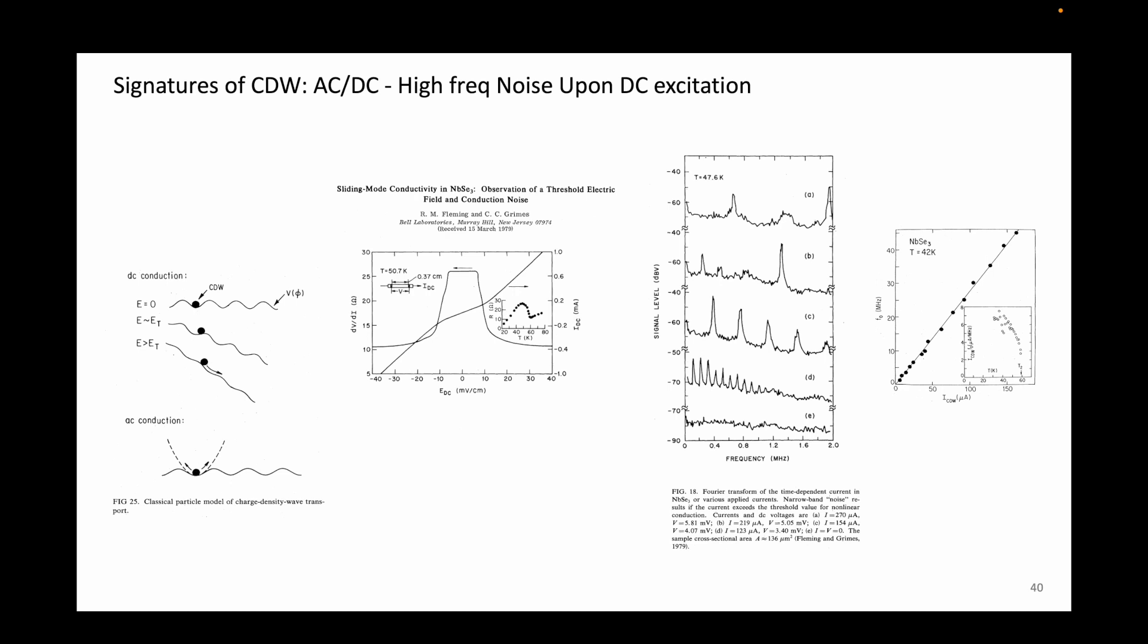In this study, the authors measured a sample of niobium triselenide using DC transport. They report a typical behavior in the DC transport. However, when they look at the Fourier transform of the noise, they saw resonance and harmonic excitations.